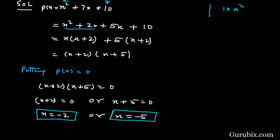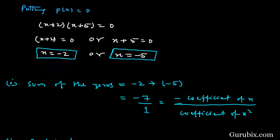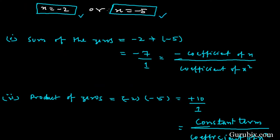Now we set the given polynomial equal to zero: p(x) equals 0. We have factorized p(x) into (x plus 2)(x plus 5) equals 0. This means x plus 2 equals 0 or x plus 5 equals 0, giving x equals negative 2 and x equals negative 5. So x equals minus 2 and x equals minus 5 are the zeros of the given polynomial.